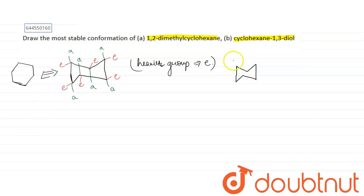So we can draw it with CH3, CH3, these both are axial. With ring flip you know the axial becomes equatorial and equatorial becomes axial during ring flip.